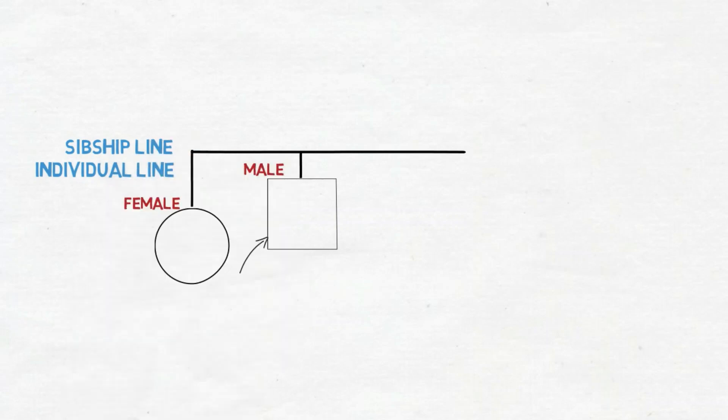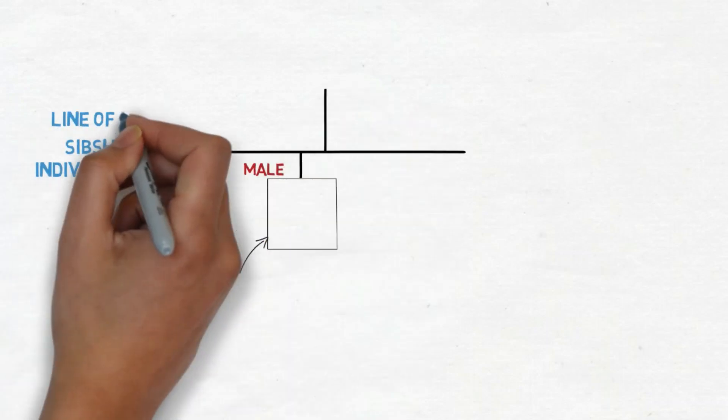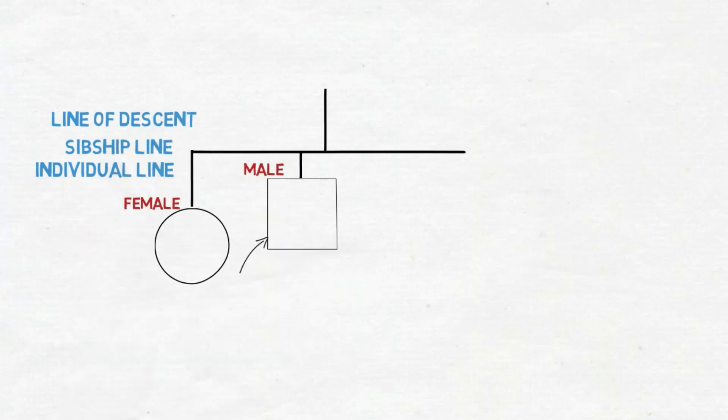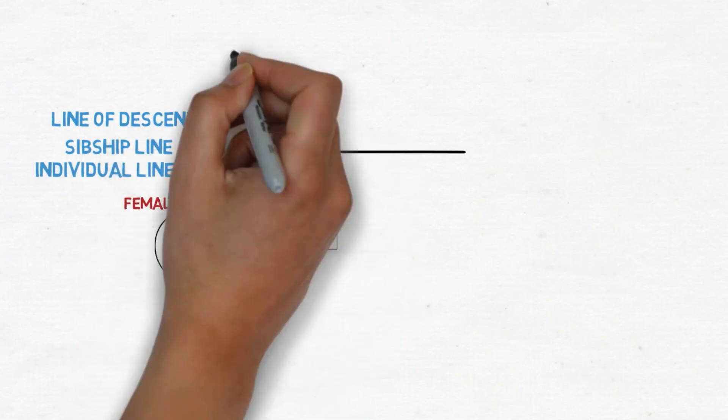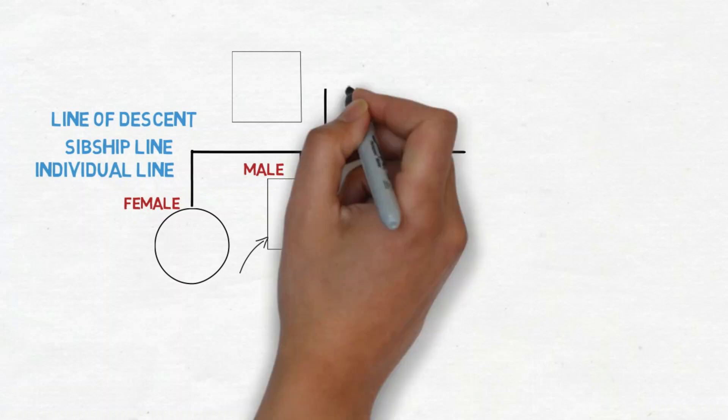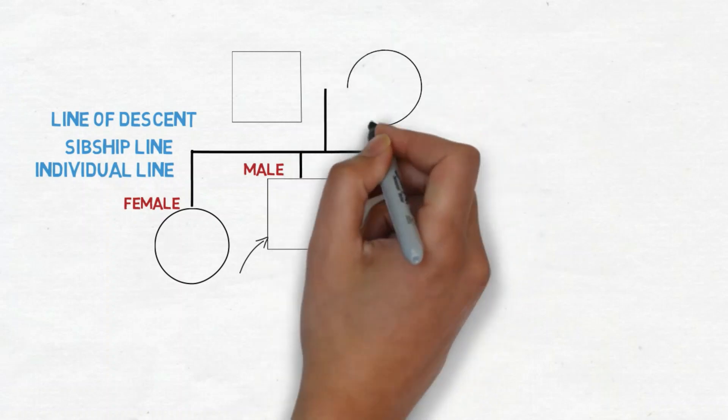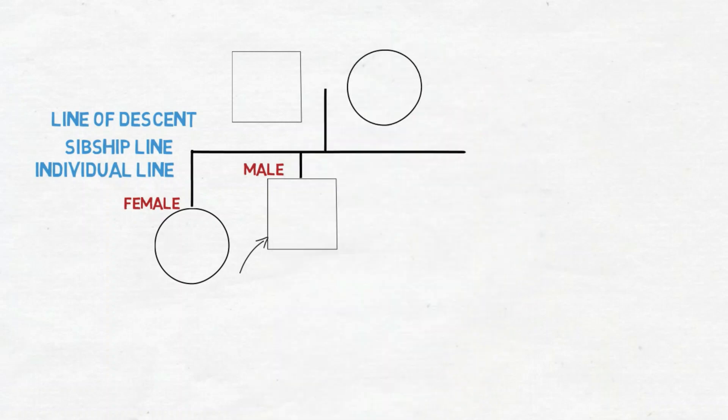From the sibship line, if we draw another line, this is called the line of descent and that leads to the parent. So we're going to be drawing in here his father and his mother and we connect the father and the mother by a line called the relationship line. And that's where the line of descent comes from.